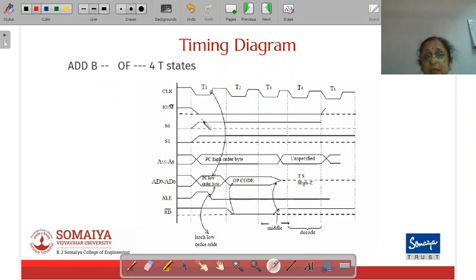In the first T state, the status lines and IOM bar line indicate the status. Both status lines are high and IOM bar indicates low. This combination indicates what kind of machine cycle is going on, which is an opcode fetch machine cycle. The address is output on A0 to A7 and A8 to A15 lines. Since you are fetching the instruction, the address must come from program counter. This is the low byte of the program counter, this is the higher byte. This is how the address is being given out to the memory.